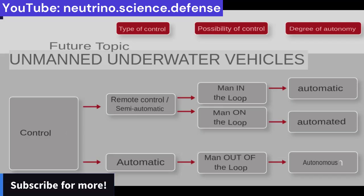When controlling these systems, a distinction is made between two different methods: remote control with partial automation, and automatic control — whereby autonomy must also be mentioned as an enhancement to automatic control.